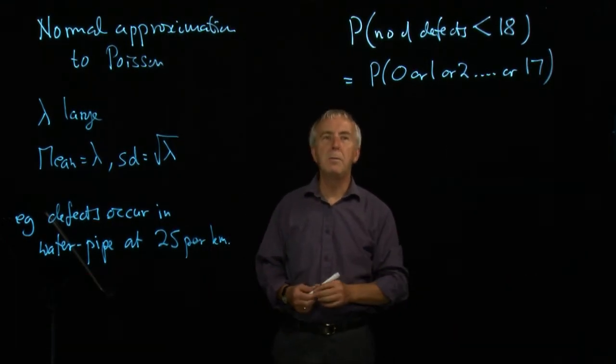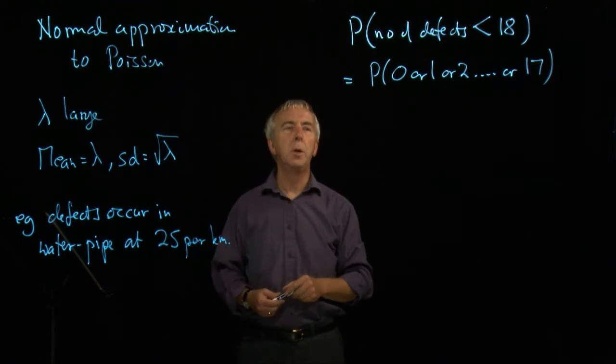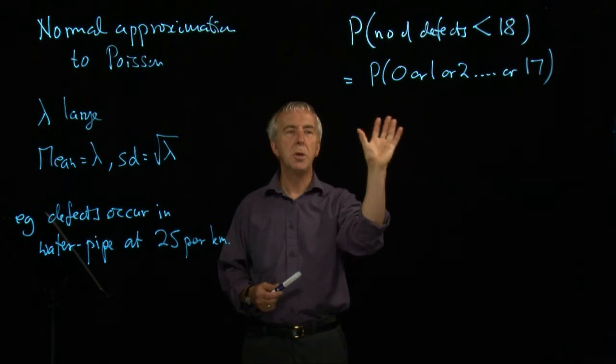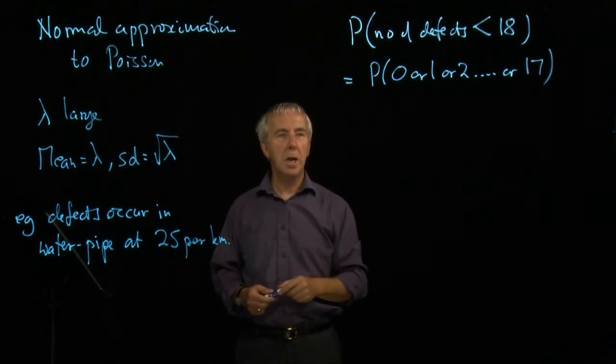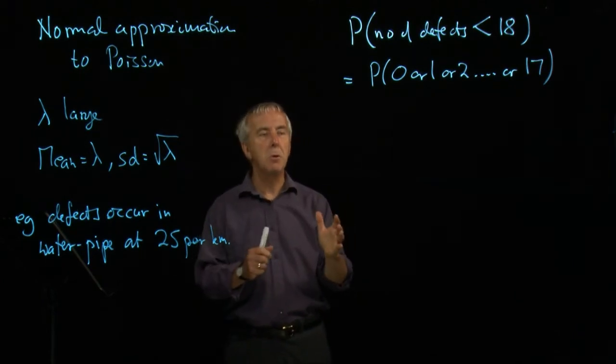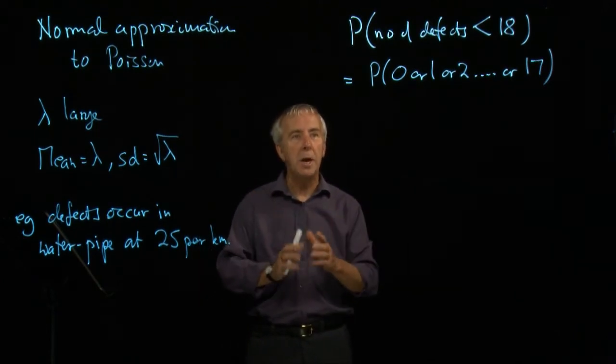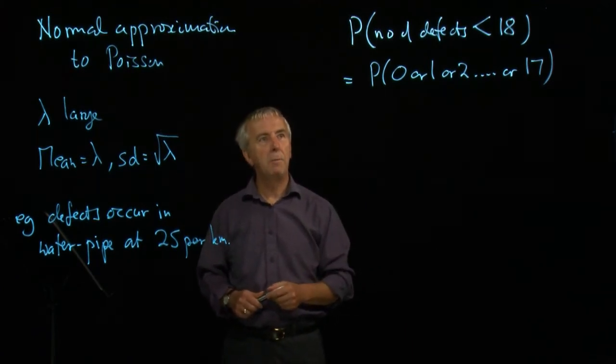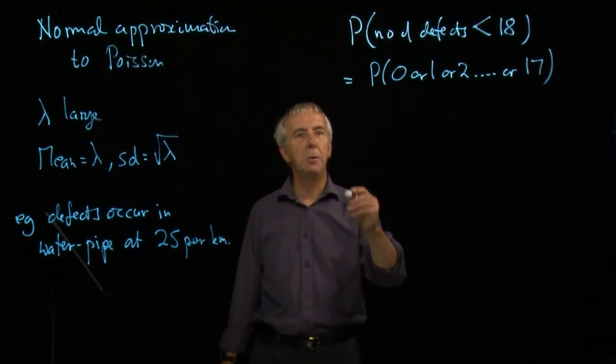So although the individual Poisson formulae are not too complicated, we'd have to do 18 separate calculations and add them together to get that total probability. And this is where the normal distribution can be so useful, because it effectively does all the adding up in one go to find the whole area under the graph.